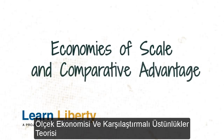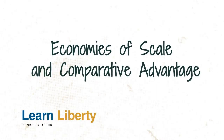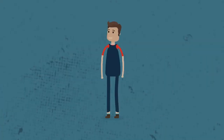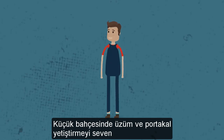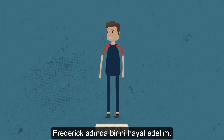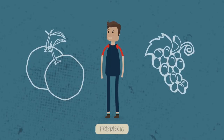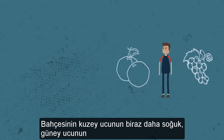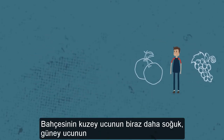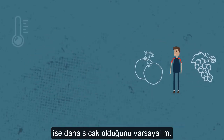Economies of Scale and Comparative Advantage. Let's suppose a fellow named Frederick lives on a few acres and that he likes to grow oranges and grapes in his garden. The north end of Frederick's garden stays a bit cooler and the south end gets more heat.